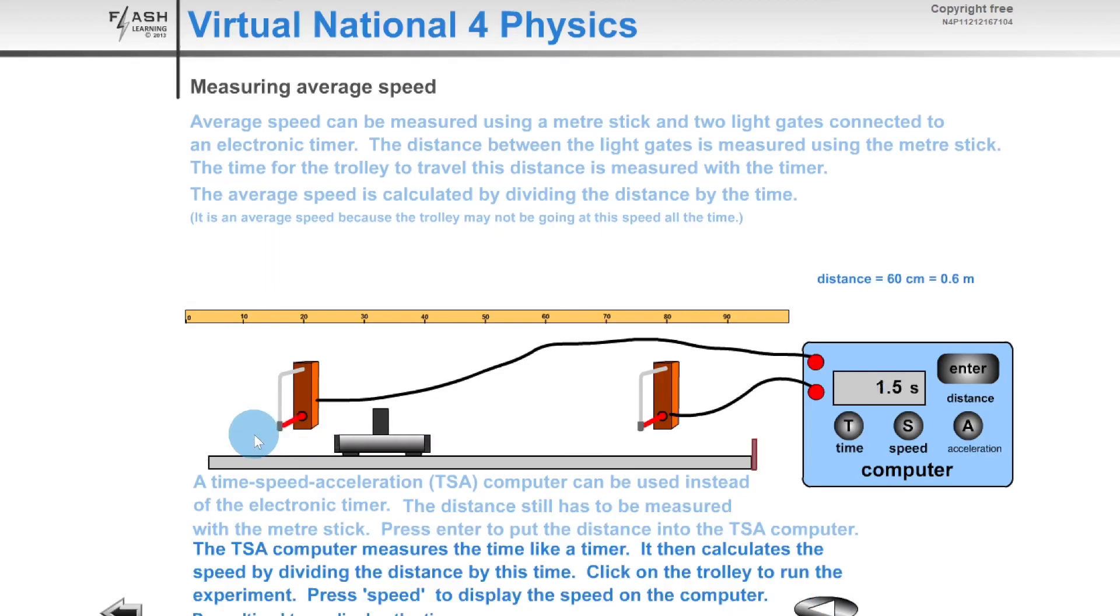If we click on the trolley, you can see that the timer will start again when the first light beam is cut, and the timer stops when the second light beam is cut. This gives me a time of two seconds, which I could then sub in to the equation for average speed equals distance over time. If you had measured it up to calculate the speed, you would get a speed there of 0.3 meters per second, just like in the first case.